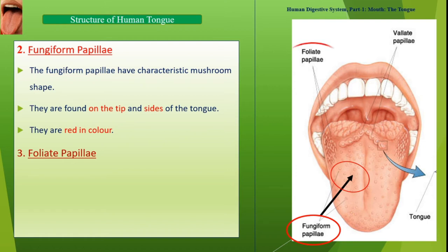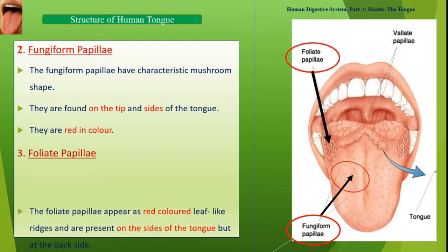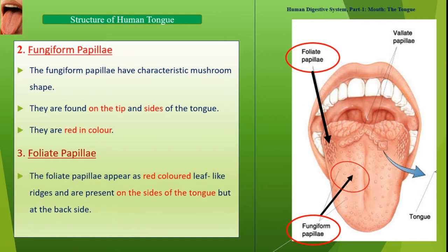Foliate papillae appear as red-colored, leaf-like ridges and are present on the sides of the tongue towards the back side.